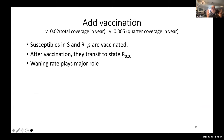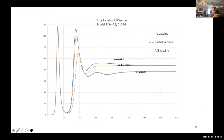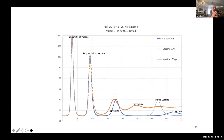With higher waning, the infection no longer dies off between waves and prevalence moves very quickly to an endemic level. Vaccination also depends heavily on waning. If waning is large — say a rate of 0.1 — you can see that prevalence under full vaccination is much lower than prevalence with no vaccination. But if waning is small, so that individuals retain their immune status longer, there are cases in which vaccination can backfire and prevalence under vaccination can actually be higher than that without vaccination.